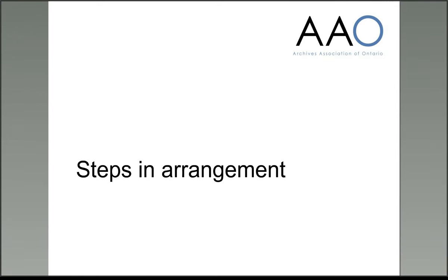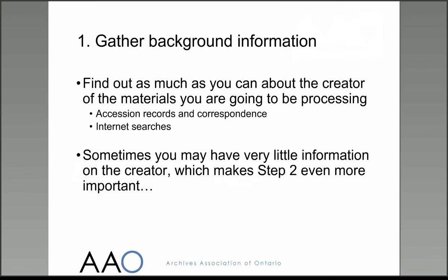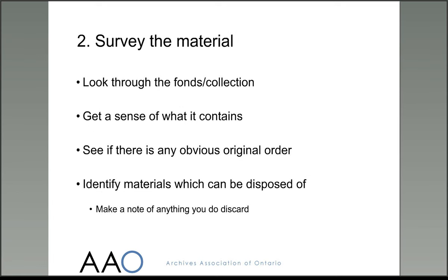Now I'm going to go through the various things you need to think about when you are arranging a group of records, whether it's a fonds or a collection. The first thing you want to do is some research on the creator or, if it's a collection, the subject of the records you want to arrange. Your institution might have information about the materials in an accession record, or you may be able to find out more about the materials from the internet. You need to survey the materials to get a sense of what there is and to see if you can detect any obvious signs of the original order. At this point, you can also start identifying materials which can be disposed of — duplicates, for example, or items which you consider to be of low archival value. If you do discard things, it's good practice to make a note of those decisions.